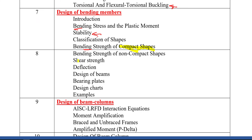We'll also cover bending strengths of non-compact shapes, followed by shear strength and how it can control the design of bending members. Then we discuss deflection and design steps for beams, bearing plates — which involve flexural straining actions and are therefore grouped under bending members — and an exposure to AISC design charts. Numerous examples will be applied to make clear how to design real bending members.